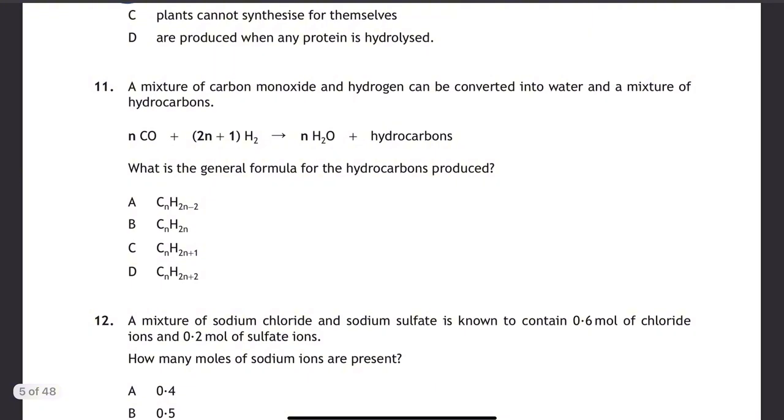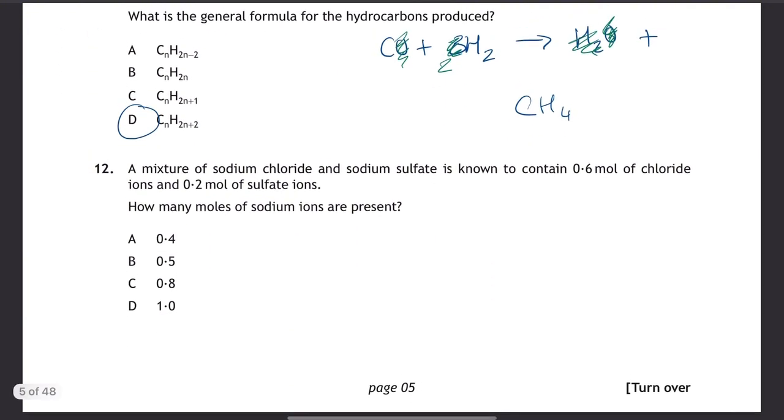Question 11 is a problem-solving question. The easiest thing to do is to pick a number for N. I would probably pick 1. If we say N equals 1, then that gives us CO plus 3H2 going to one mole of H2O, plus the hydrocarbon. We just need to work out how many carbons we have left. If we cancel out stuff on both sides, we're left with a carbon and four hydrogens. So that would fit the general formula CnH2n+2.